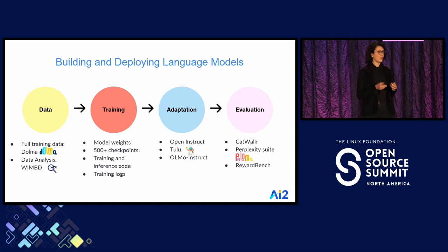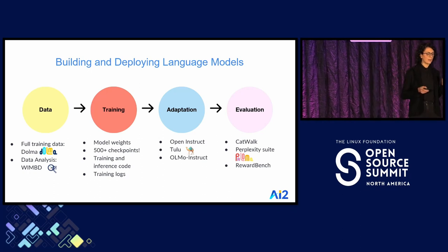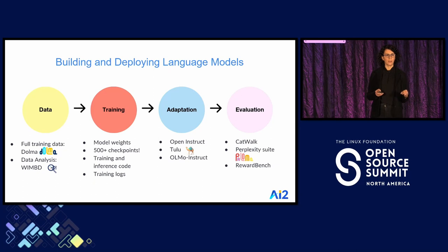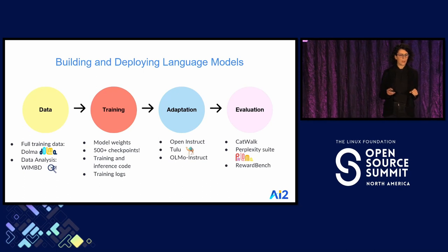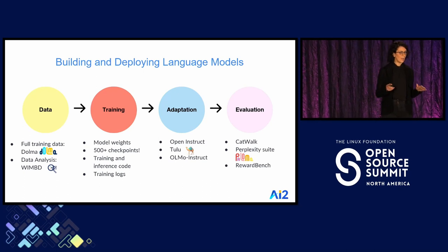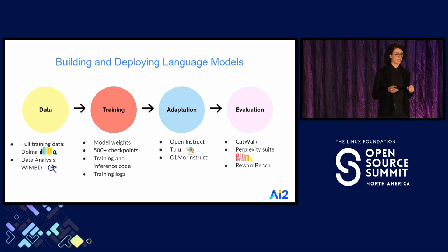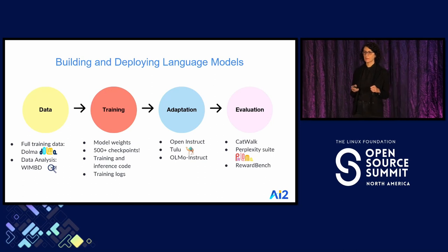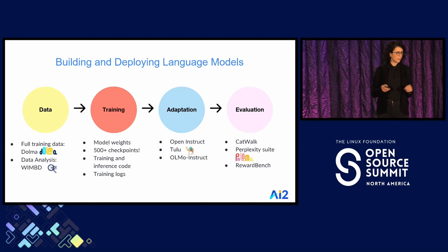Here are the artifacts we have released across each of these four categories, including our training data and toolkit — how to curate the data and how to analyze and study it. For training, we have all the model weights, the training code, and even intermediate checkpoints. For adaptation, we have adapted the language model to different use cases — we have Open Instruct on GitHub and also OLMo Instruct. And finally, our evaluation pipeline through the Catwalk framework and also our perplexity benchmark, Paloma.